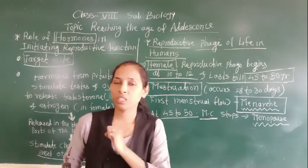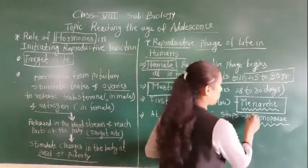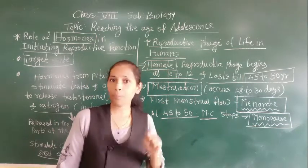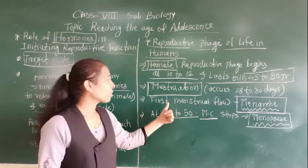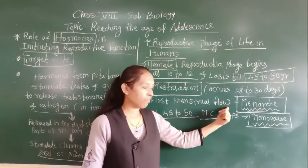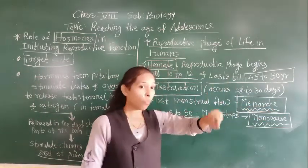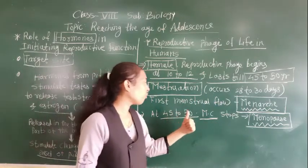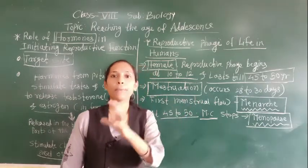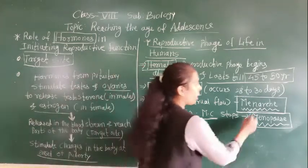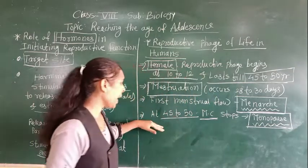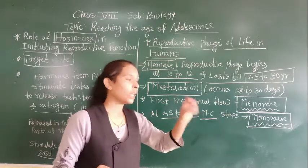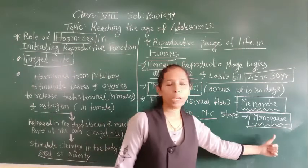The stopping of the menstruation cycle is called menopause. So there are two important concepts: the first menstruation flow in the female is called menarche, while the stopping of the menstruation cycle at the age of 45 to 50 is called menopause.